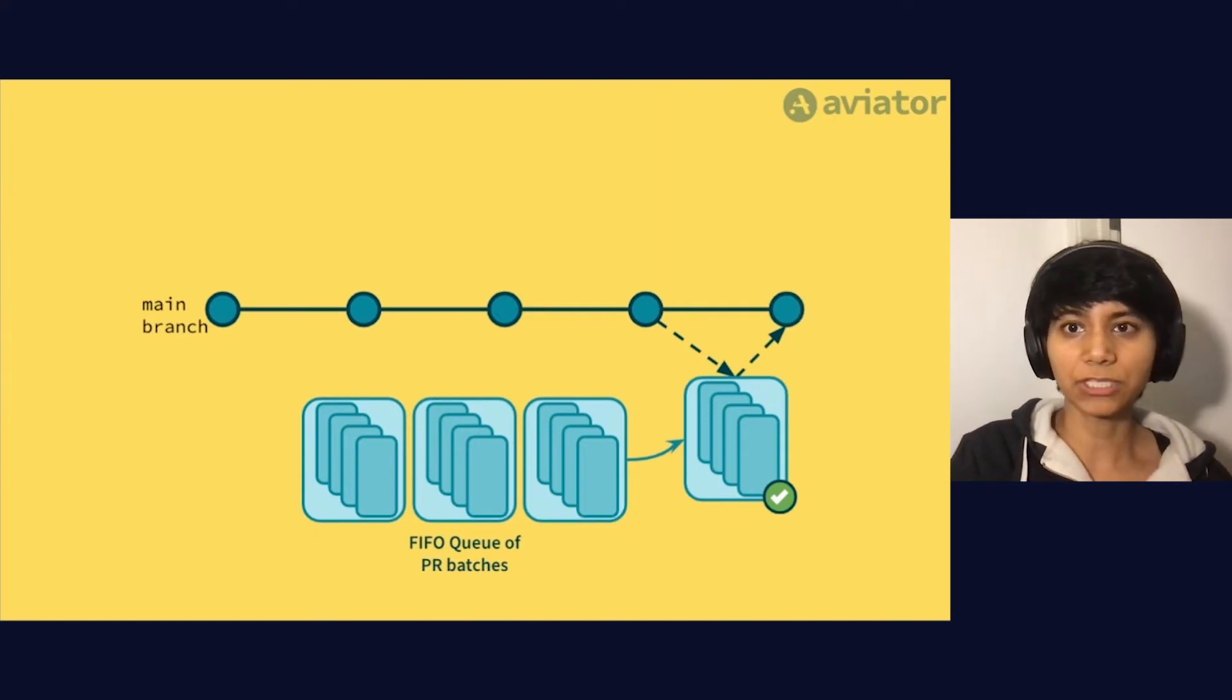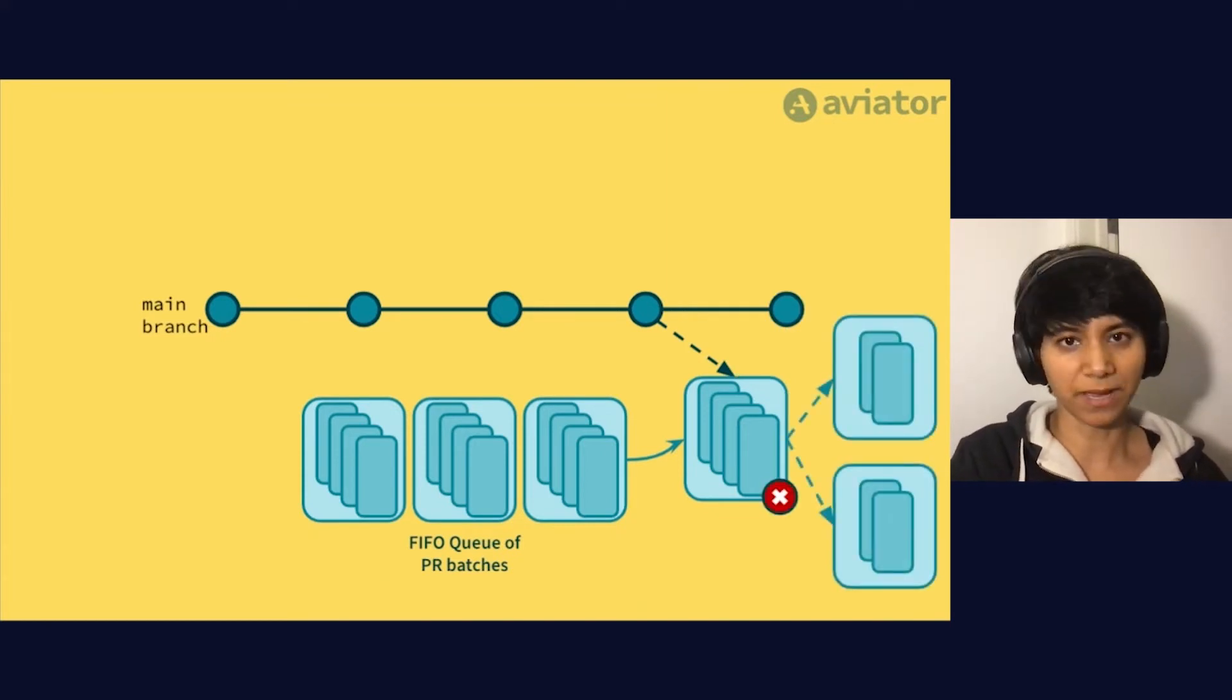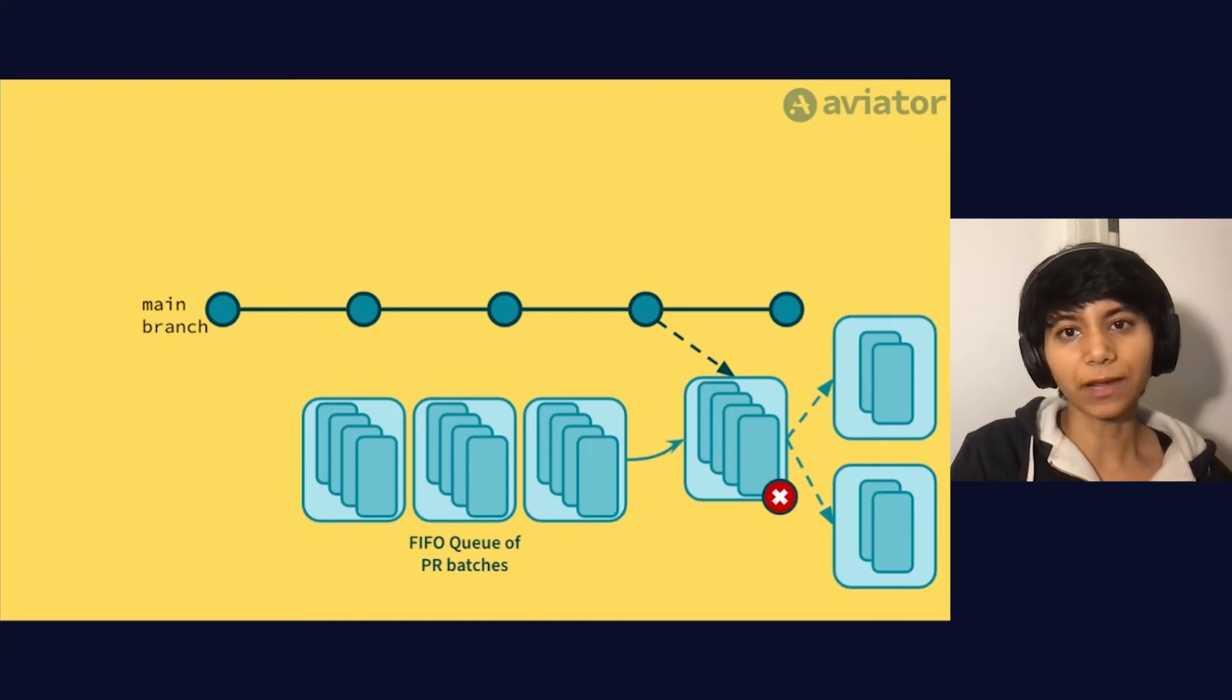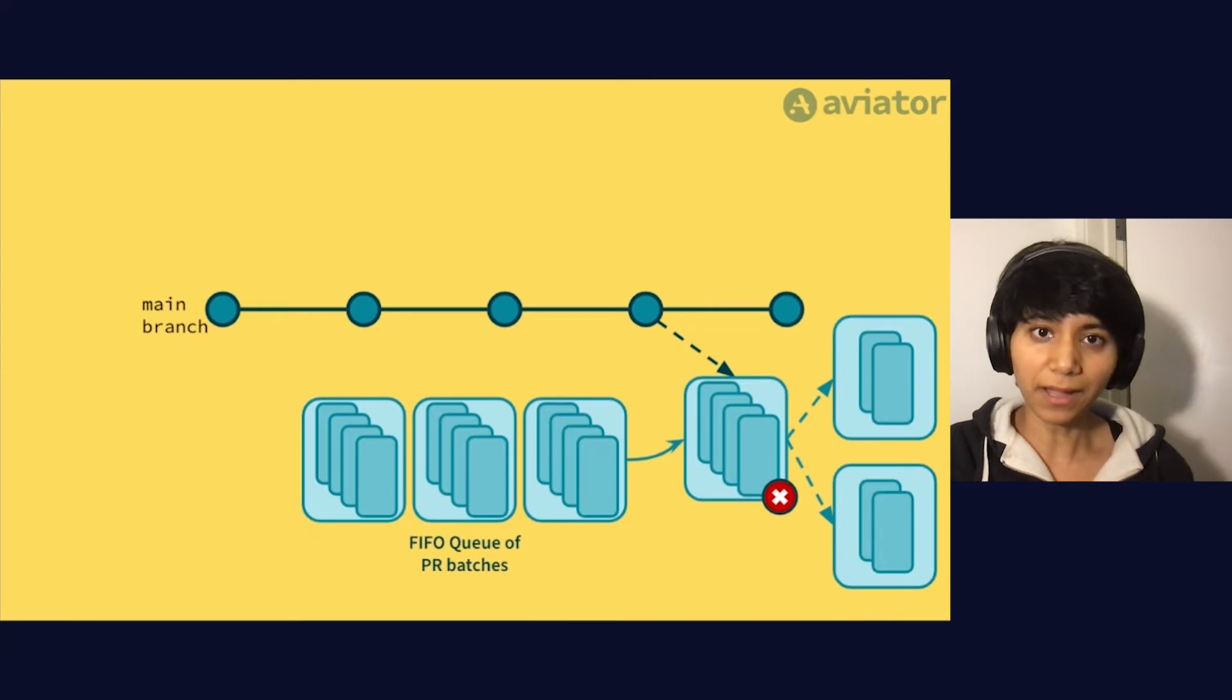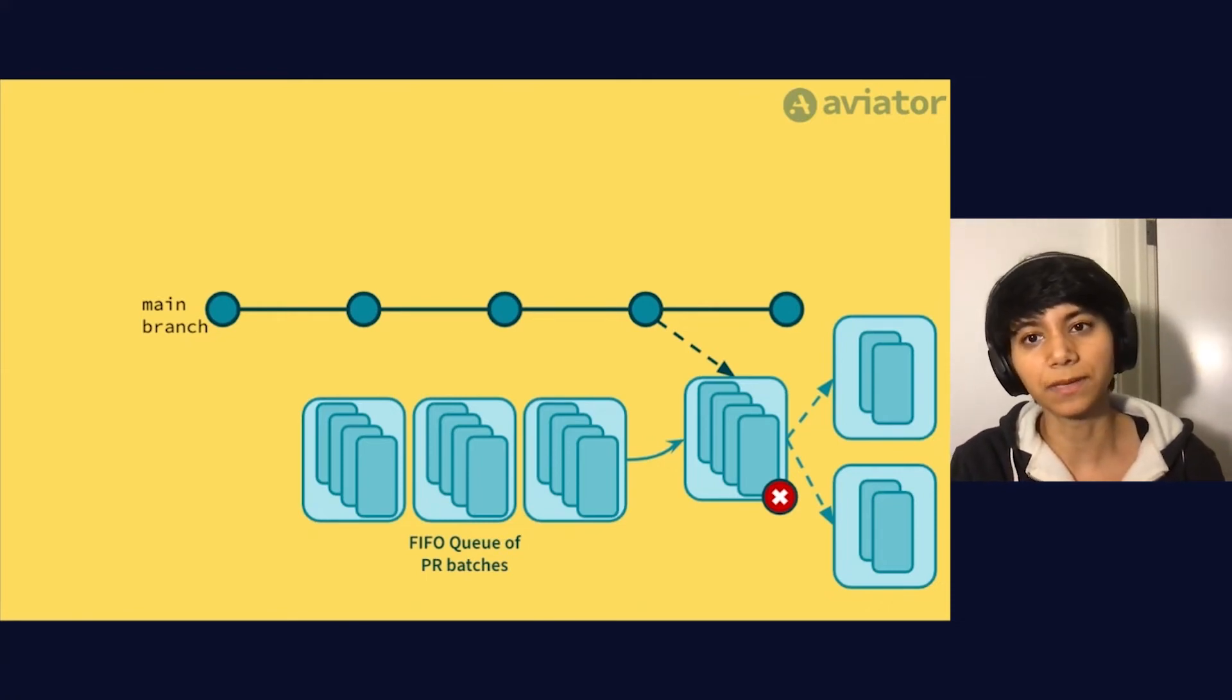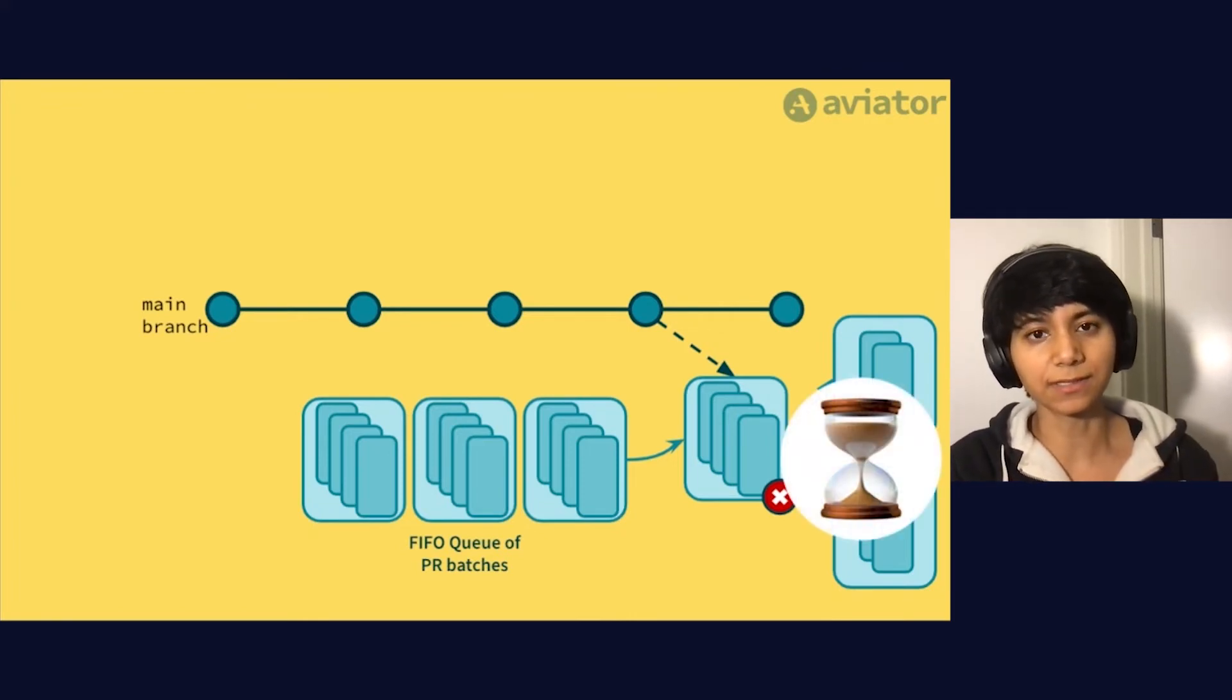But if the batch doesn't work, you can run some sort of bisection algorithm to figure out which specific PR in the batch caused the main branch to break. But then you discover that when everything's compatible and this batching system actually works great, but when a batch fails, it takes a very long time to isolate the offending PRs. And this time becomes increasingly long as your batch size increases.